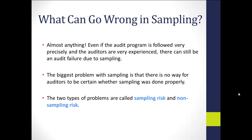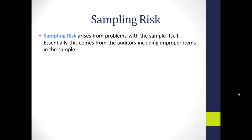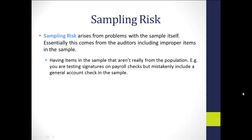The two types of problems in sampling are sampling risk and non-sampling risk. Sampling risk arises from problems with items in the sample — having a non-representative sample. The problem comes from including improper items. For example, if you're testing signatures on payroll checks but mistakenly include a general account check in your sample, you have a sampling risk error.